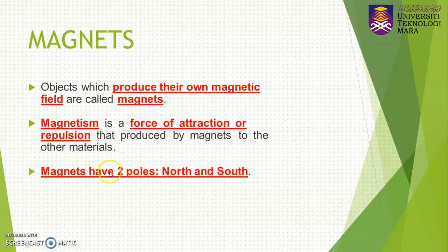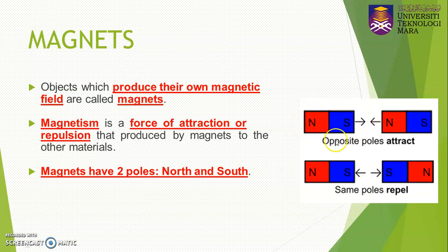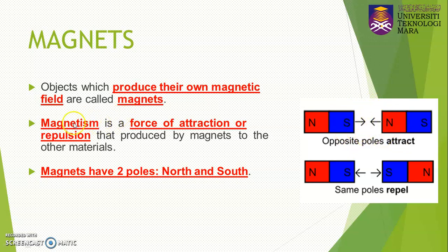Usually magnets have two poles: the north pole and the south pole — just like our Earth, which also has a north and south, so our Earth can also be considered a magnet. For example, with a bar magnet you have a north pole and a south pole. The opposite poles attract each other, and this force of attraction we call magnetism.